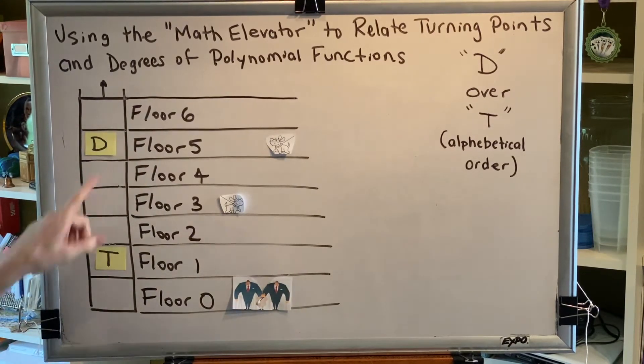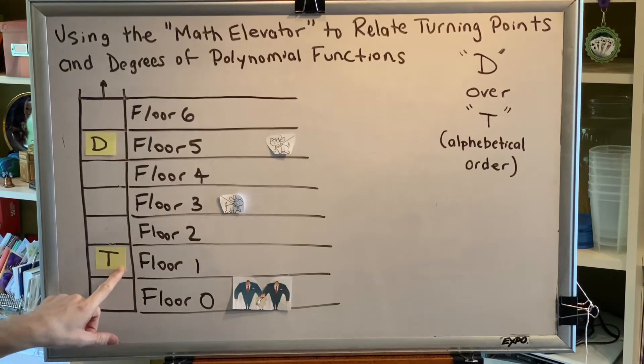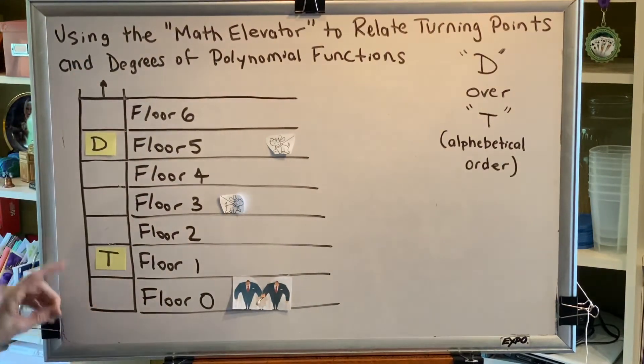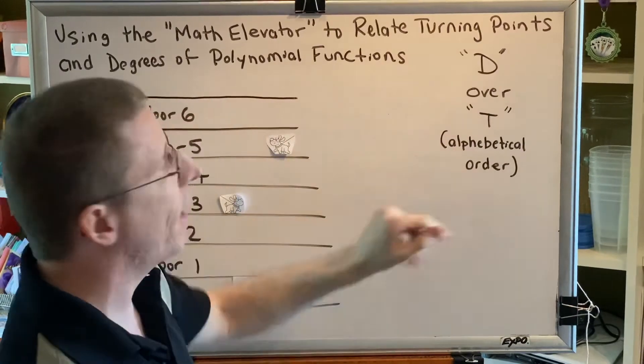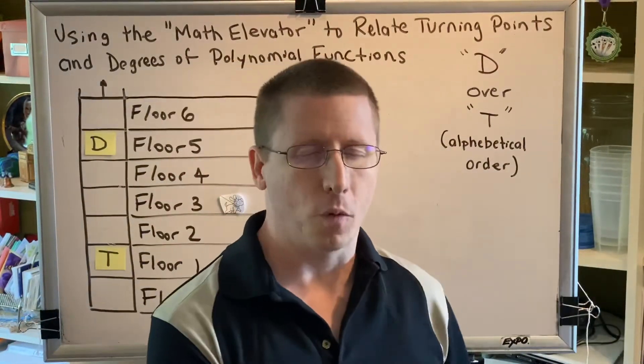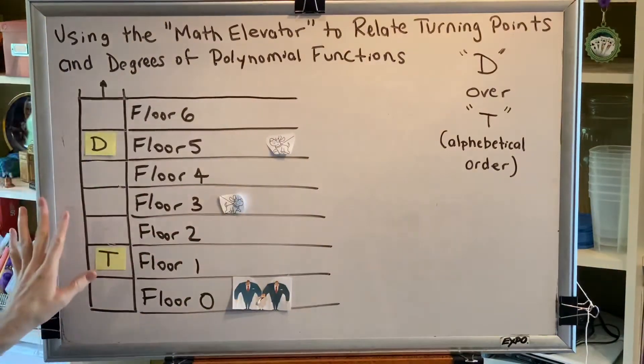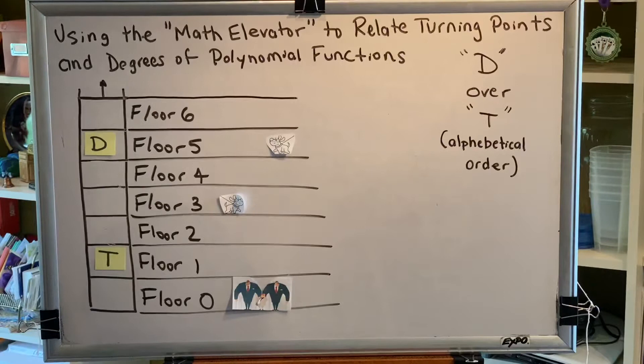Not surprisingly, the D car stands for degree, and the T car for turning points. So we notice that in this particular elevator shaft, the D is over the T, D over T. This is in alphabetical order. D comes before T in the alphabet. This tells us the relationship between degrees and turning points of polynomial functions.